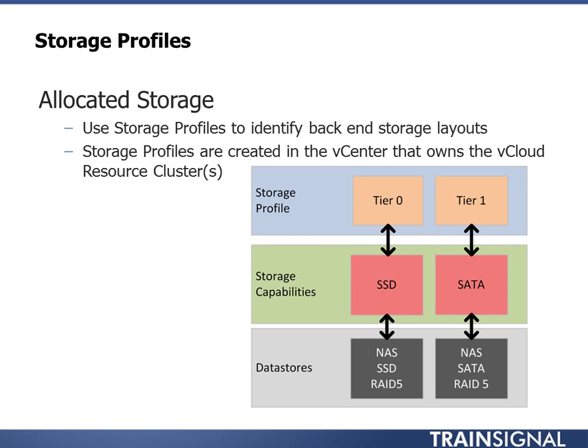Moving to org VDC storage and networking — first, storage profiles. A storage profile is a way to tag underlying storage to give it a quality of service. An SSD or flash drive performs much faster than a SATA drive. With a storage profile, you can create profiles like Tier 0 and Tier 1 — on the back end, Tier 0 maps to SSD and Tier 1 maps to SATA. You use storage profiles from vCenter to let vCloud Director understand the different storage capabilities available.